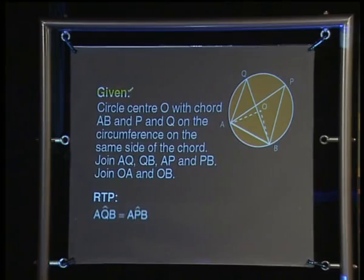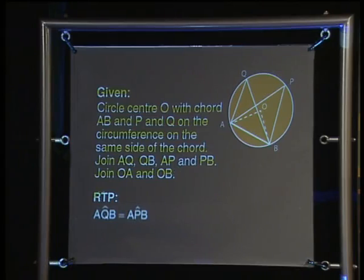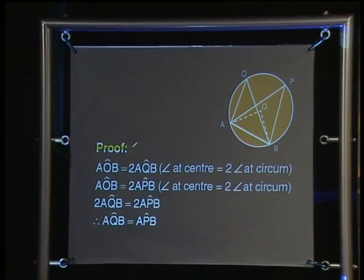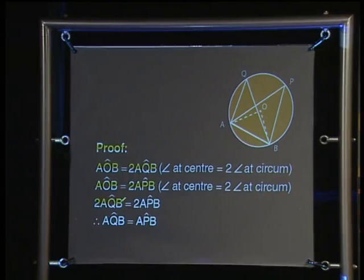Here is the formal proof. Given a circle with center O, chord AB, and points P and Q on the circumference on the same side of the chord — join AQ, QB, AP, PB, OA, and OB. Required to prove: angle AQB equals angle APB. Proof: angle AOB equals twice angle AQB because the angle at the center is twice the angle at the circumference. Angle AOB also equals twice angle APB for the same reason. So two times AQB equals two times APB, and therefore AQB equals APB. When using this reason in a proof, you can shorten it to 'angles in the same segment.'